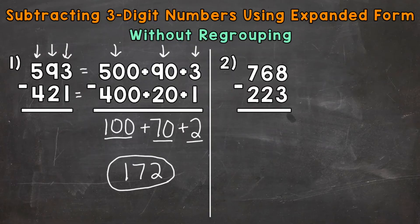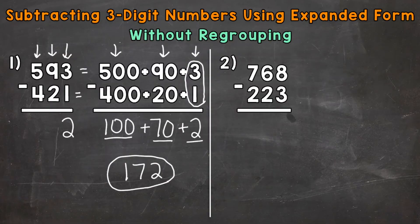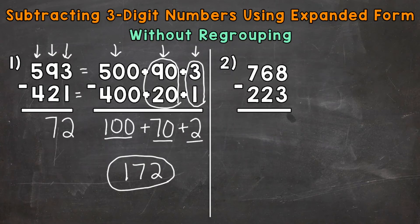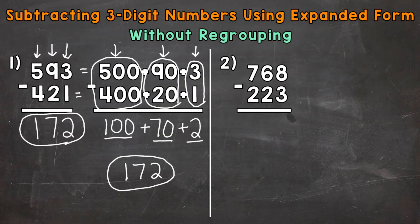Let's solve this to the left as well to see if we get the same answer. Start with the ones: three ones minus one one, represented right here — three minus one gives us two. Move to the tens: nine tens minus two tens, represented right here — nine minus two gives us a seven in the tens place. And then lastly, the hundreds: five hundreds minus four hundreds, represented right here — five minus four gives us one. And we get 172 over there as well.